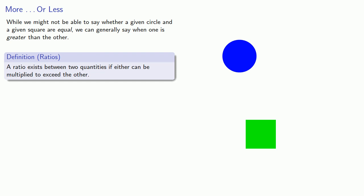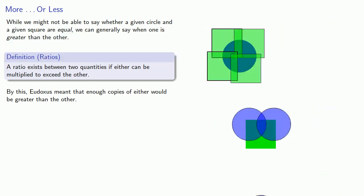And what Eudoxus meant by this is that if you take either of these two quantities, if you make enough copies of one of them, all those copies together will be greater than the other quantity. And this is true no matter how large or small the quantities are, as long as they're the same type of quantity.